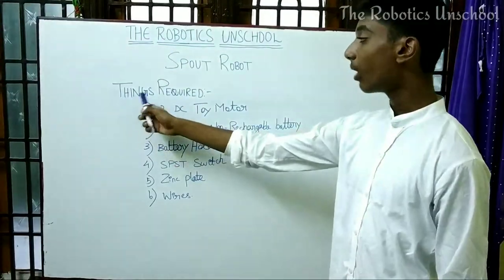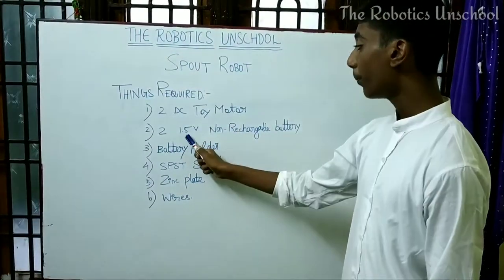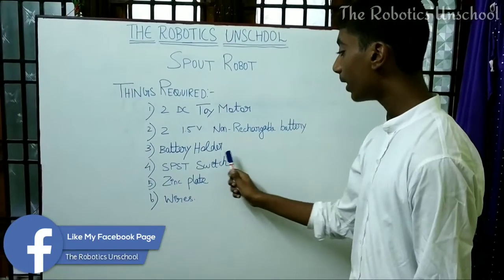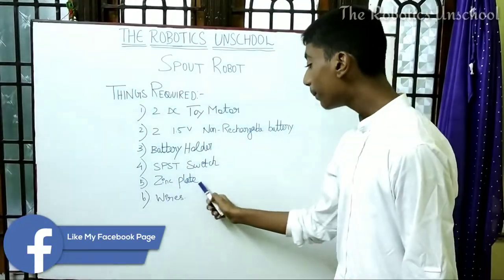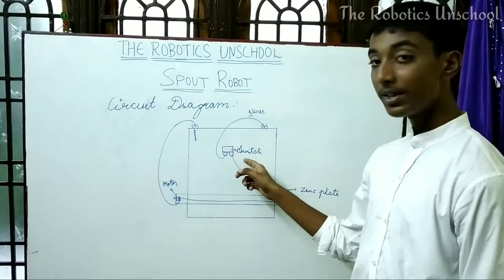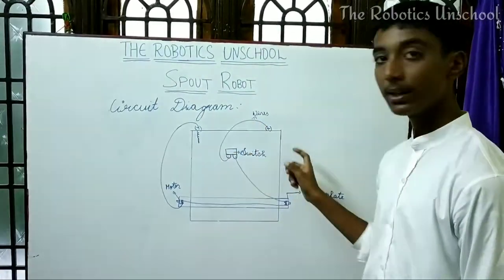So let us see what are all the things required: 2 piece of DC toy motor, 2 piece of 1.5 volt non-rechargeable battery, battery holder, SPST switch, card as on-off switch, zinc plate, and few wires. Let us see the circuit items. These are all the switch, motor, zinc plate, and some connective wires, and battery holder. Then we go to the practical.